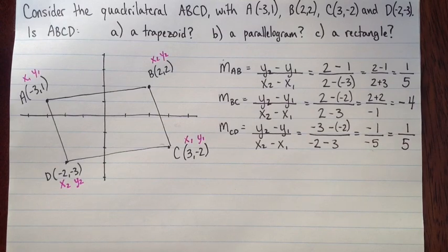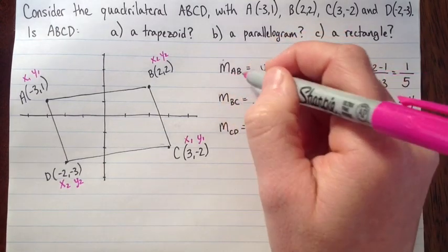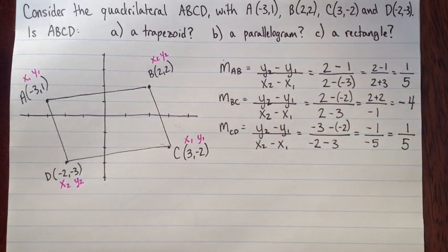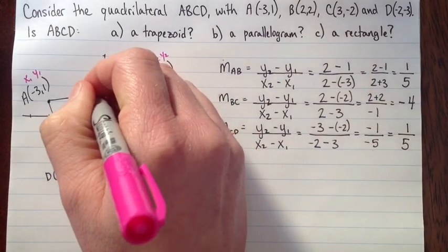So right now, the slopes of AB and CD are the same. That means these lines are parallel.